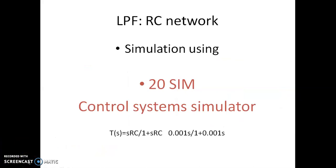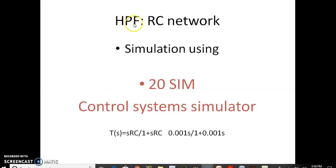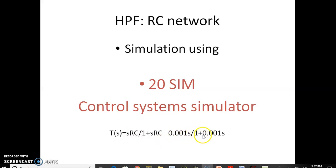This is the transfer function we are going to get for this network: sRC divided by 1 plus sRC. We will now see the 20-sim implementation of the same. Let us assume RC equals 1 milli, so the transfer function becomes 0.001s divided by 1 plus 0.001s.